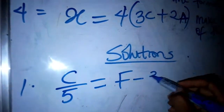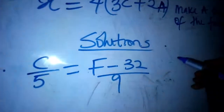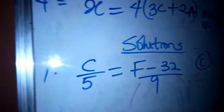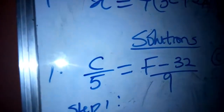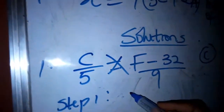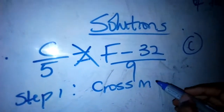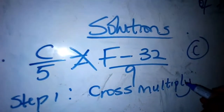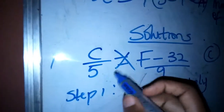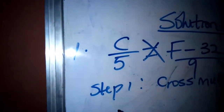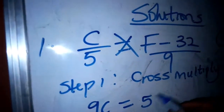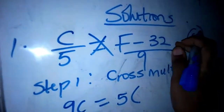We are starting with C. Step one is to cross multiply. Anytime you are given a question like this where one fraction equals another fraction, you have to cross multiply. So cross multiplying gives us 9C equals 5 into bracket — we are multiplying this 5 with the bracket — so 5 into bracket F minus 32.